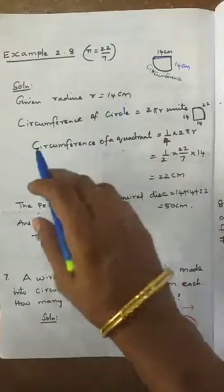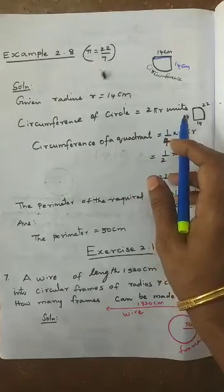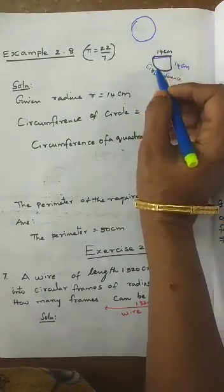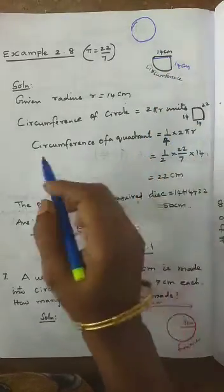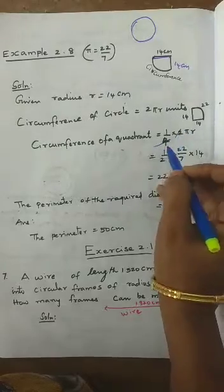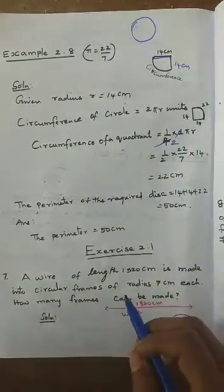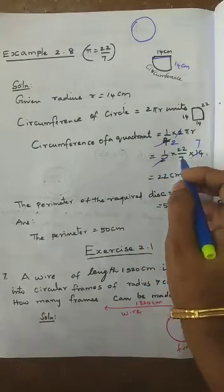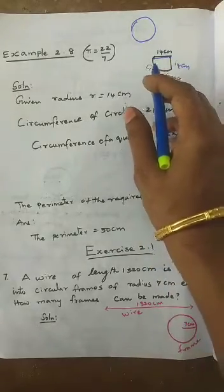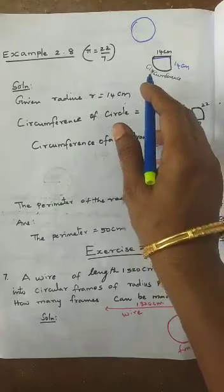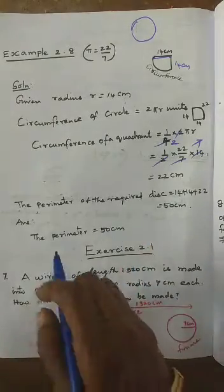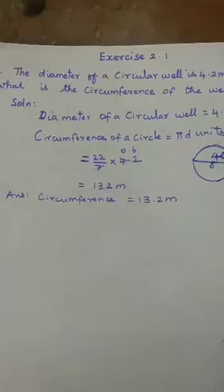Given radius = 14 cm. Full circumference of the circle = 2πr. We need only the quarter portion, so arc length of quadrant = (1/4) × 2πr = (1/2) × (22/7) × 14. Cancel 7 and 14: 14 ÷ 7 = 2, then cancel 2: gives 22 cm. Perimeter of the quadrant = 14 + 14 + 22 = 50 cm. So the perimeter of the quadrant-shaped disc is 50 cm.